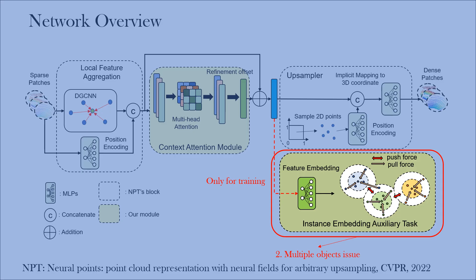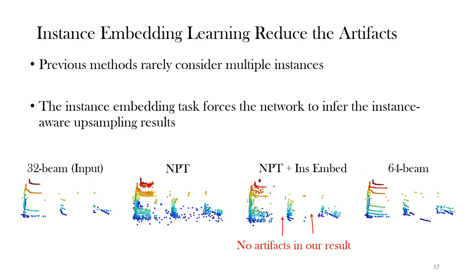The second contribution is our instance embedding, introduced during the training phase. Previous methods seldom consider multiple instances, so their results often introduce many artifacts between them. In our method, we introduce an instance embedding to force the network to learn instance-aware features. As shown by the red arrow, our results demonstrate a significant reduction in artifacts between car instances.